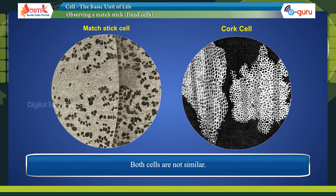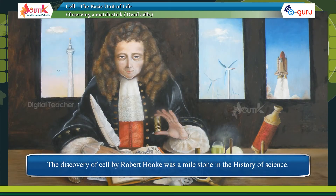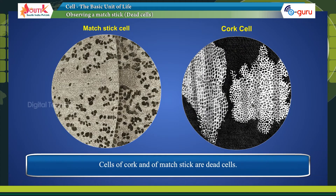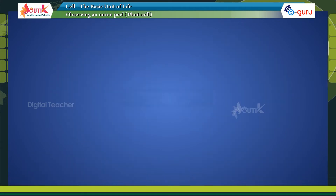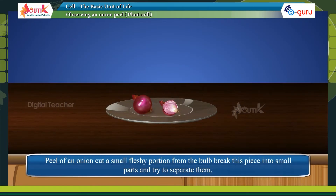Both cells are not similar. The discovery of the cell by Robert Hooke was a milestone in the history of science. Cells of cork and of a matchstick are dead cells.